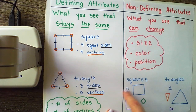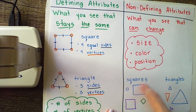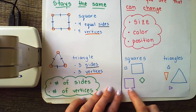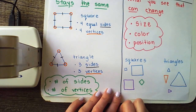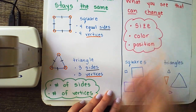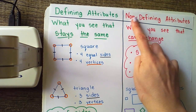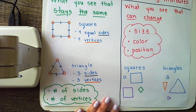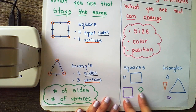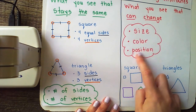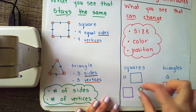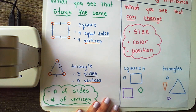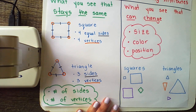They both have four sides and four vertices — those are the defining attributes that make them squares. Does it matter that one square is purple and one is green? No! Because color is not a defining attribute. It is a non-defining attribute. What matters is that these both have four sides and four vertices. Does it matter the position that this green square is moved a little bit on its side? Nope! Because it still has four equal sides and four equal vertices.